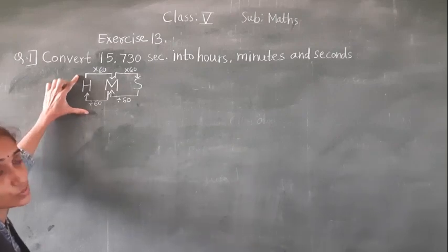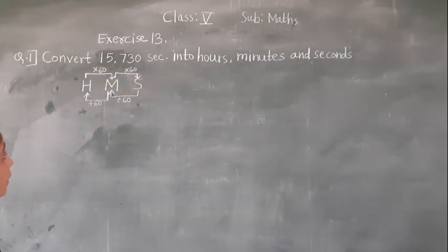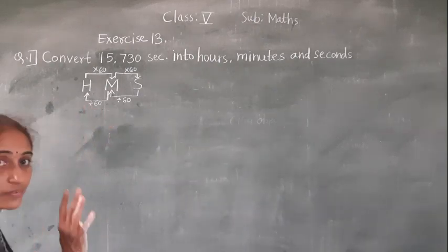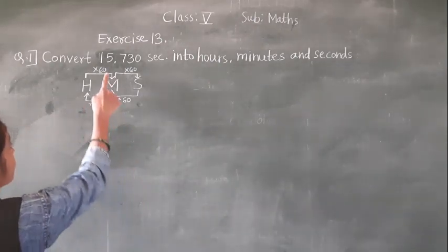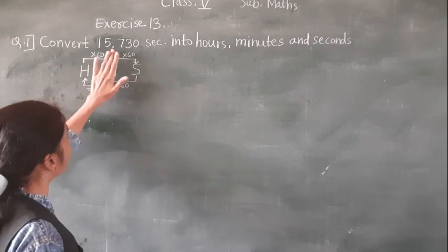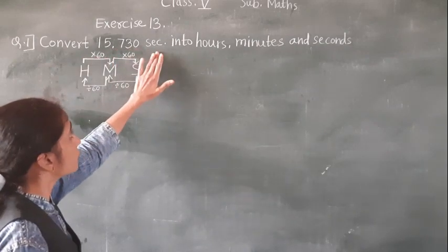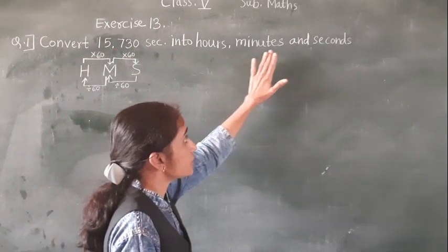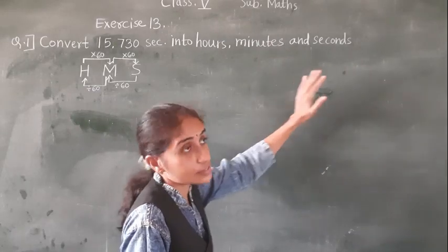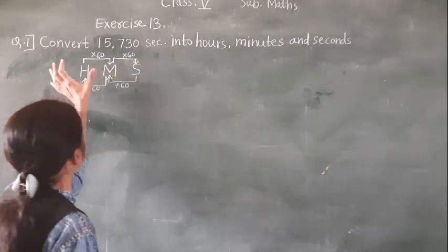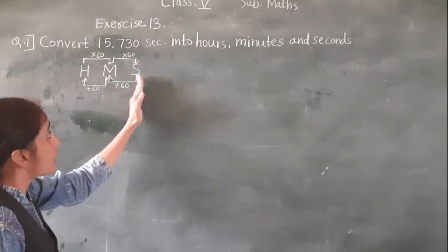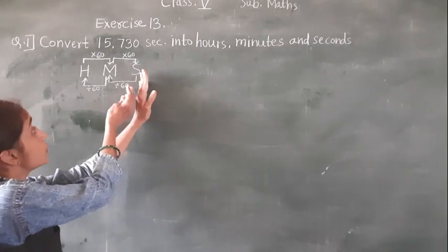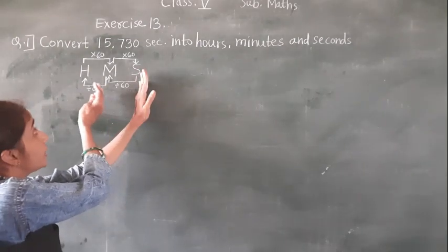If you understand this diagram, it is easy to solve this example. Now convert 15,730 seconds into hours, minutes and seconds. This divide in the seconds — we have to convert into seconds, minutes and hours, going towards left, so we divide.